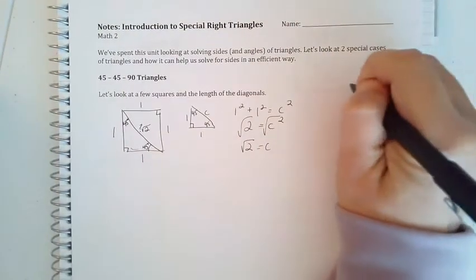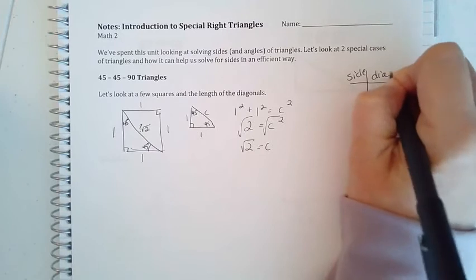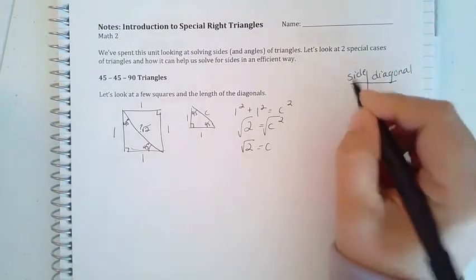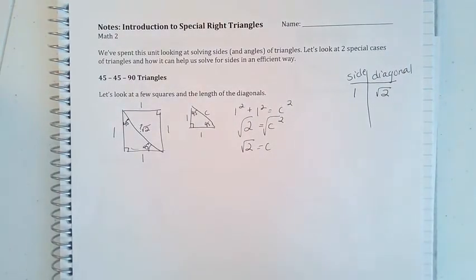If I start a little table over here, I'm going to call this 'side' and this 'diagonal'. If I have a side of 1, I have a diagonal of root 2.